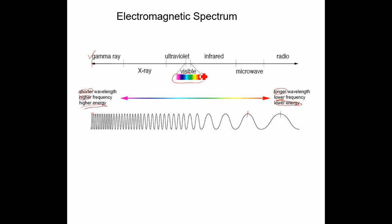Visible light is the only portion we can see, and it's also used for photography. Ultraviolet can be used for disinfecting surfaces and eliminating bacteria and pathogens. Infrared is really heat, so it can be used for cooking food, as can microwaves in a microwave oven. Radio and TV waves are used for broadcasting, x-rays for taking pictures of bones and teeth, and gamma rays for treatment of cancer.